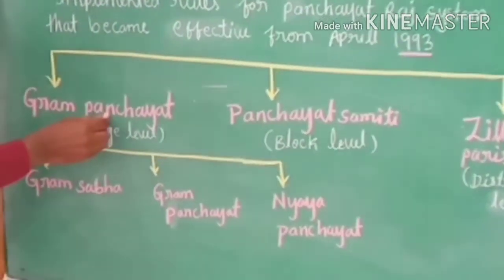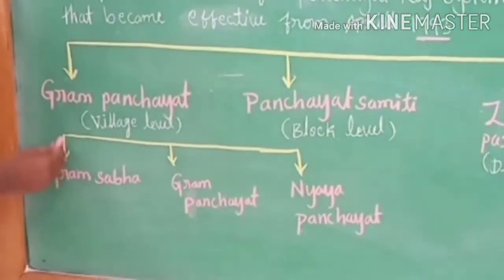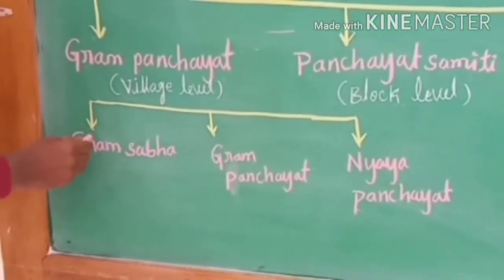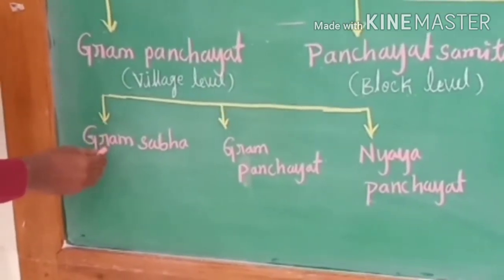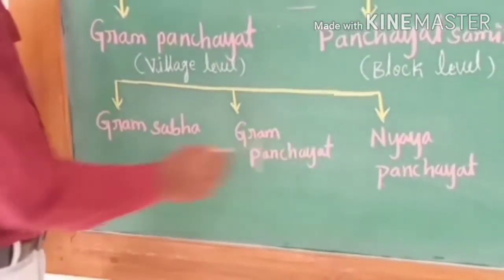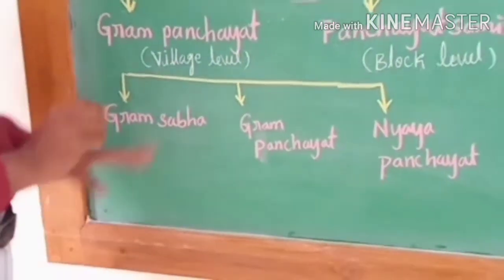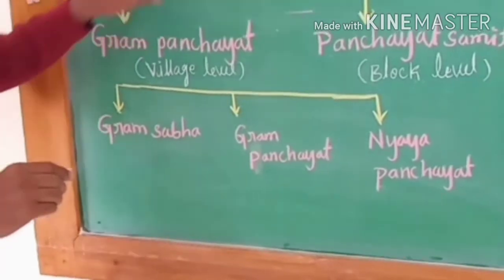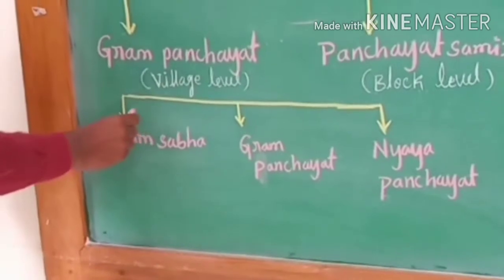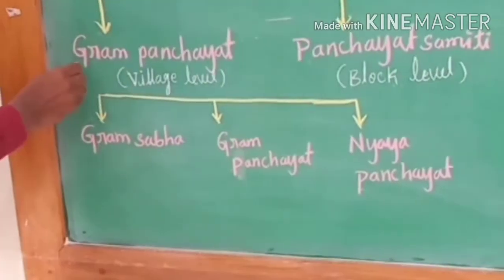The Gram Panchayat is further classified into three steps. The first is Gram Sabha, the second is Gram Panchayat, and the third is Nyay Panchayat. So the Gram Panchayat at village level has these three sub-steps. Now let us discuss each one in detail — starting with Gram Sabha, then Gram Panchayat, and then Nyay Panchayat.